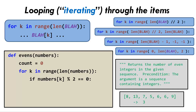For example, consider 8. Divide it by 2, and the remainder is zero. Yes, 8 is even. Or consider 13. Divide it by 2, and the remainder is 1, not zero. No, 13 is not even. Just do a few more examples if you are not yet convinced.